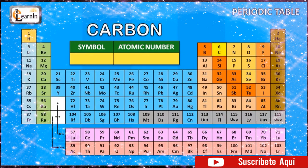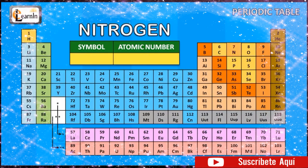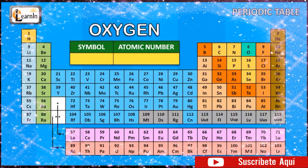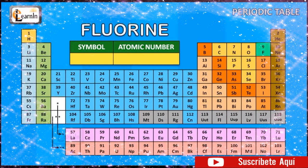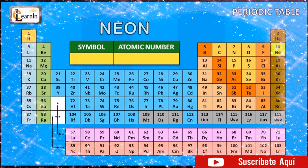The element carbon is represented as C and has an atomic number of 6. The element nitrogen is represented as N and has an atomic number of 7. The element oxygen is represented as O and has an atomic number of 8. The element fluorine is represented as F and has an atomic number of 9. The element neon is represented as Ne and has an atomic number of 10.